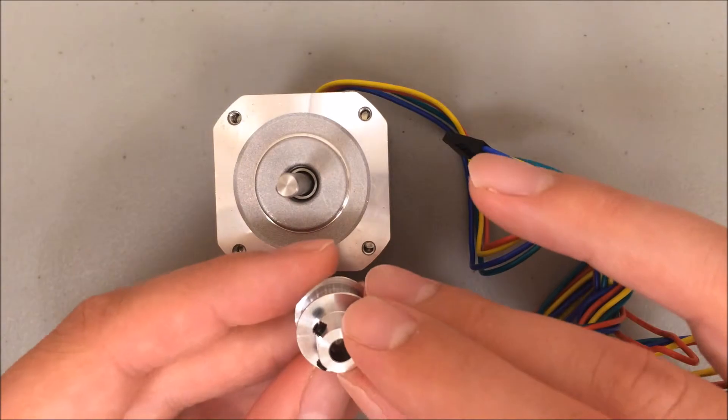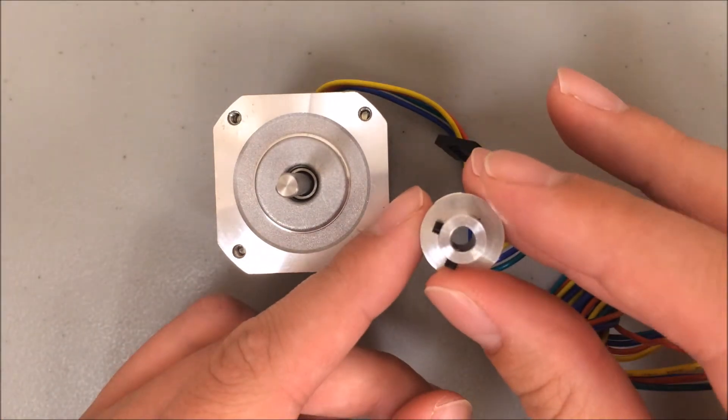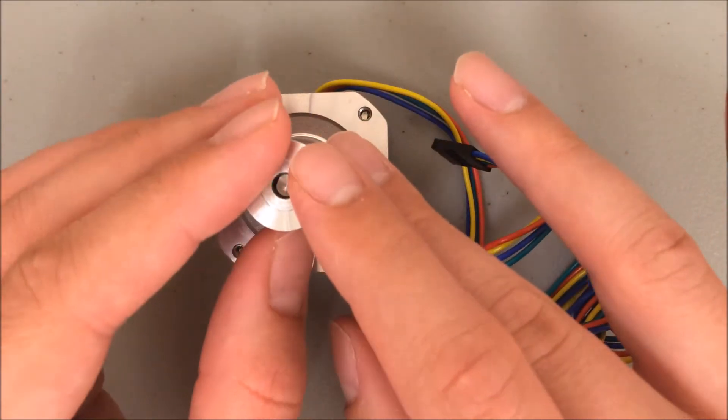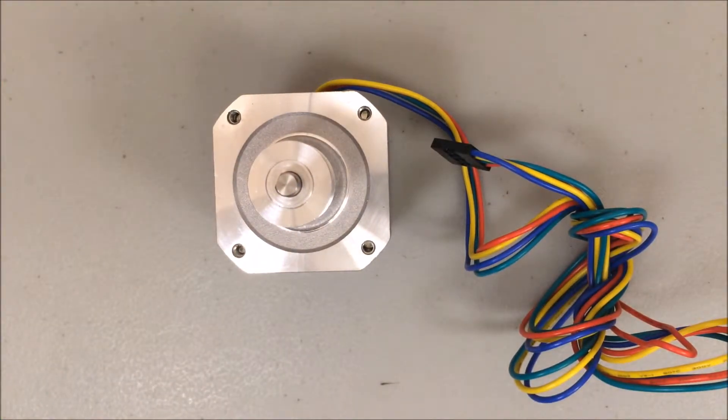If the set screws are at the right depth, meaning that this is open down the middle, it should slide right on top. You want the wider end on top. Just drop that down on top of the motor shaft.